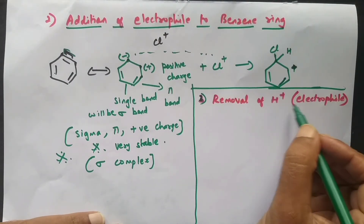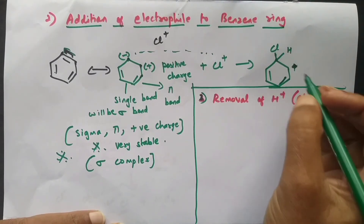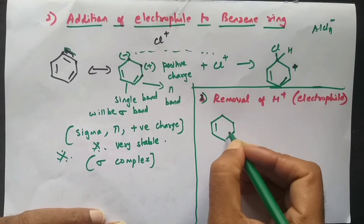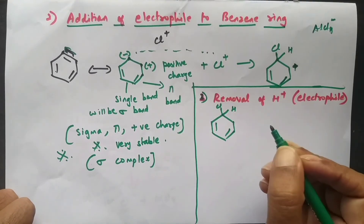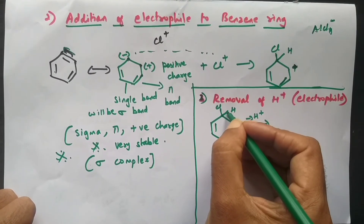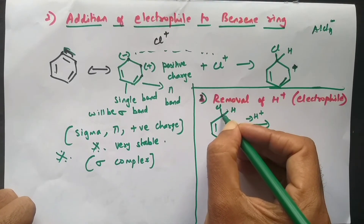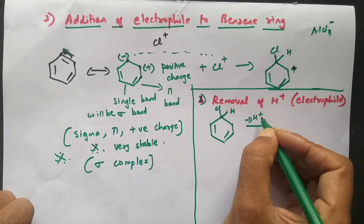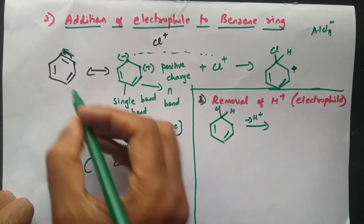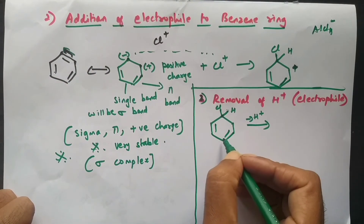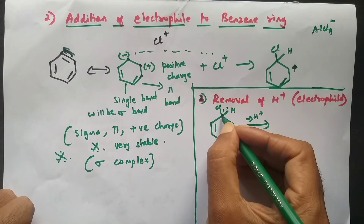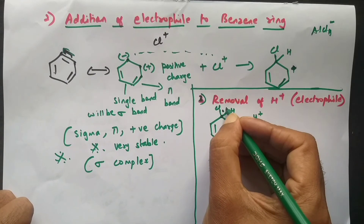The last step is the removal of H⁺. We already have AlCl₄⁻ in the reaction. In the intermediate, we have a Cl and an H on the same carbon. The carbon-hydrogen bond has two electrons — one associated with carbon and one with hydrogen. When hydrogen moves out as H⁺, the two electrons remain. These two electrons can then form a carbon-carbon bond to regain aromaticity — restoring the three double bonds.